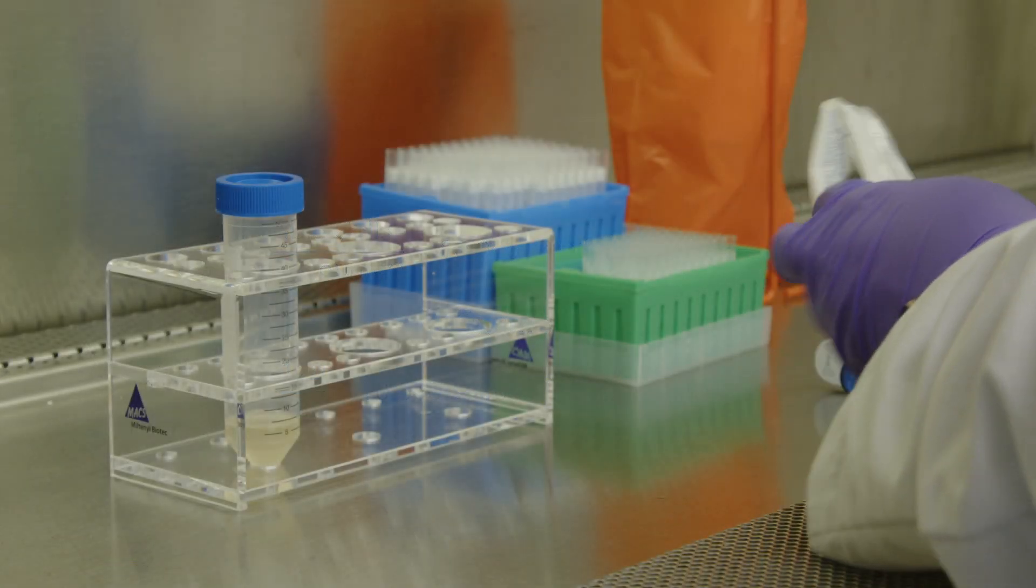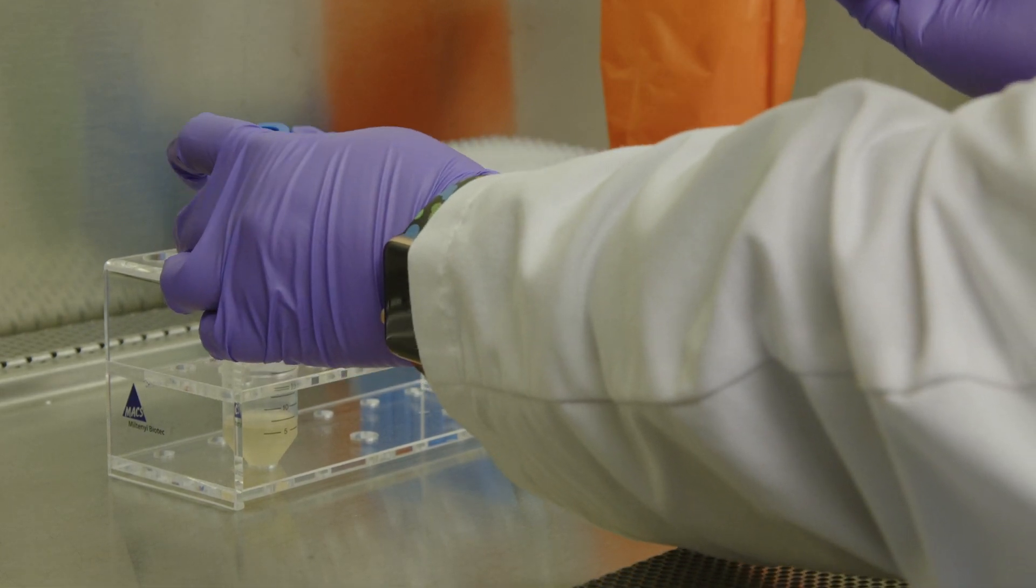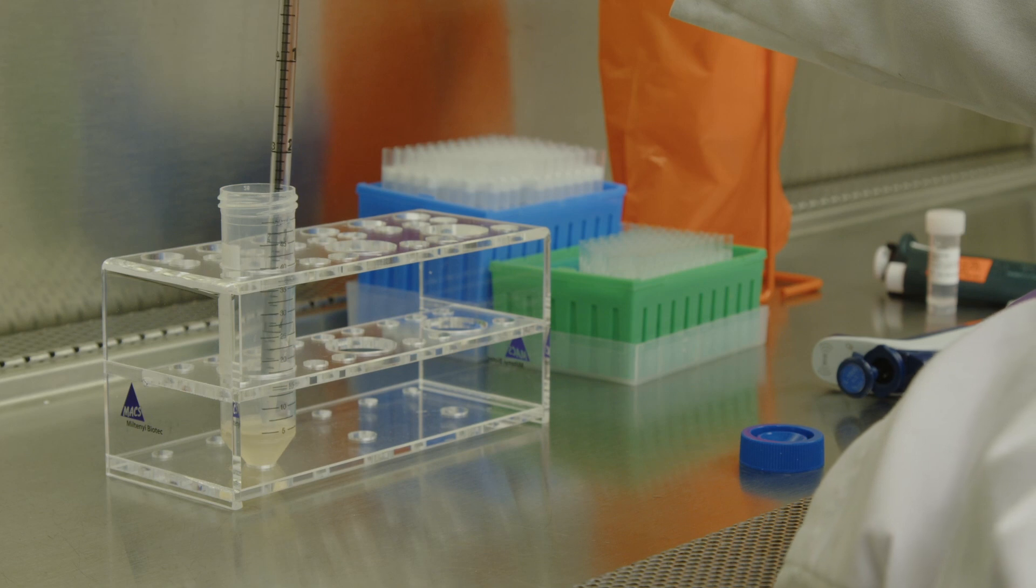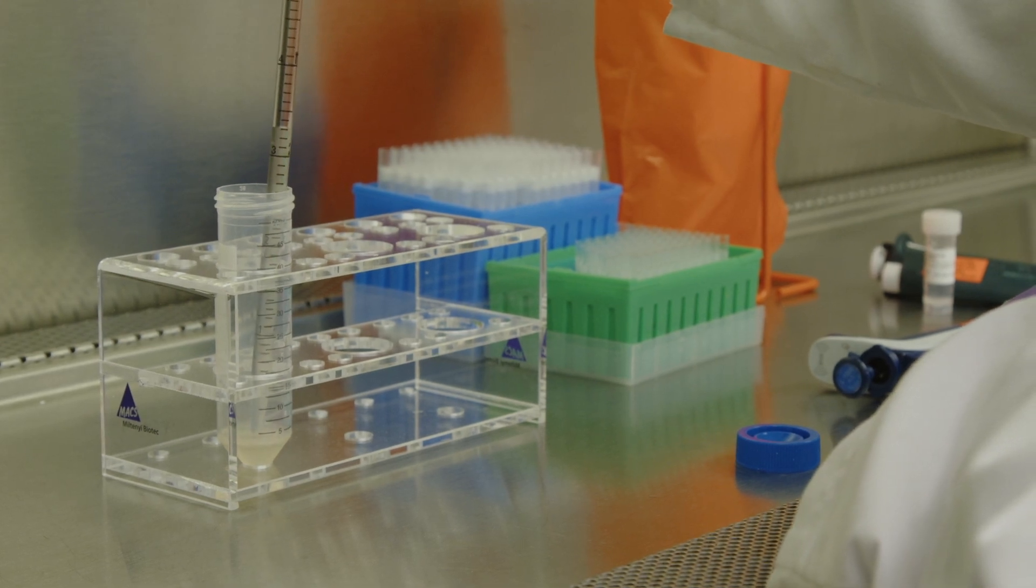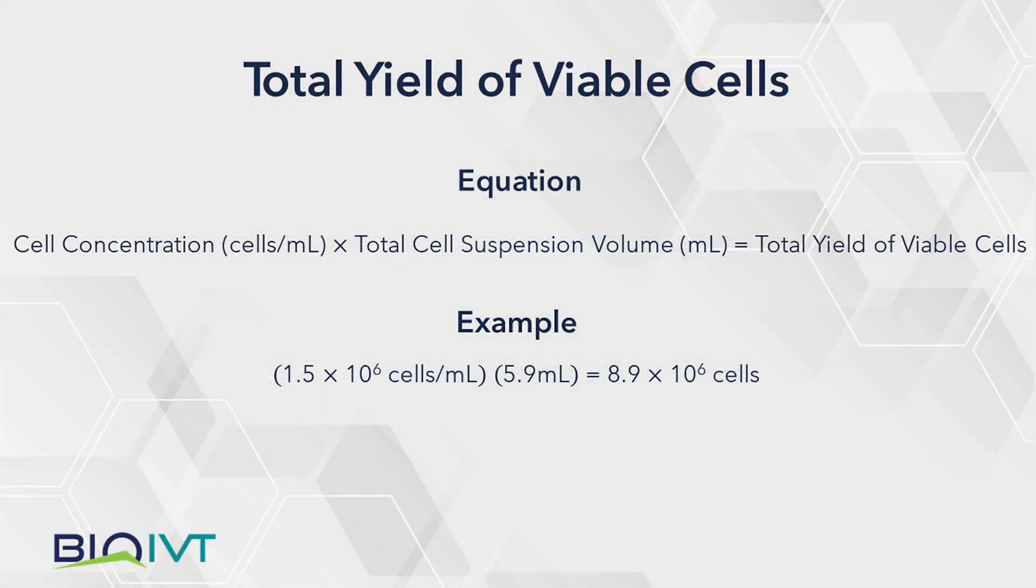The following procedure determines the total yield of viable cells. These calculations account for the volume that was removed during cell counting, which in this example was 100 microliters of the cell suspension. Determine the total yield of viable cells by multiplying the volume of cell suspension by the concentration of viable cells.